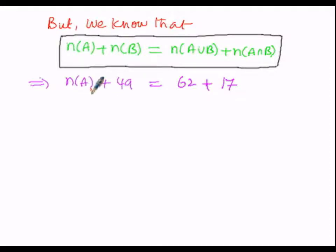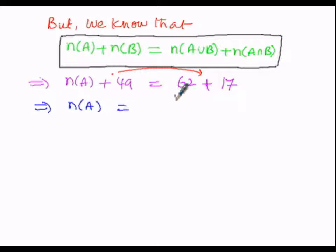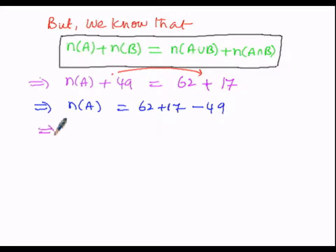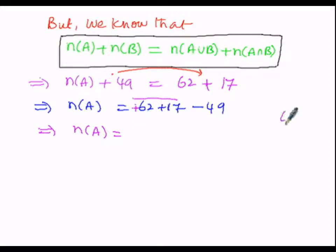On the left hand side, 49 is positive. We are going to transpose it over to the right hand side. That implies N of A equals the right hand side quantities: 62 plus 17, and when 49 is transposed to the right hand side it becomes minus 49. So N of A equals 62 plus 17 minus 49, where 17 is positive and 62 is also positive.